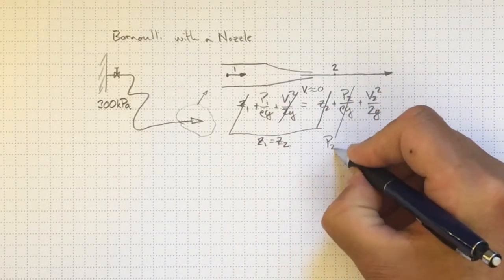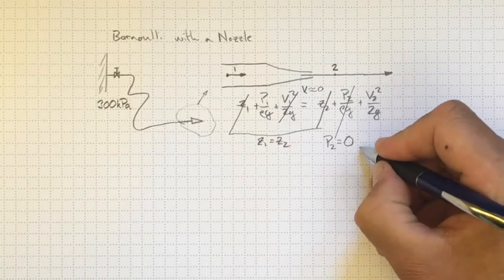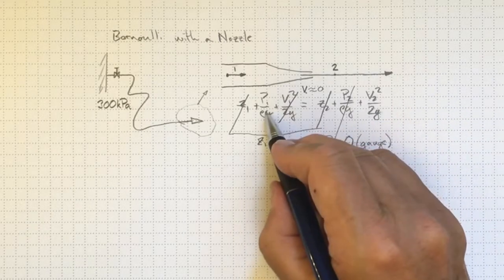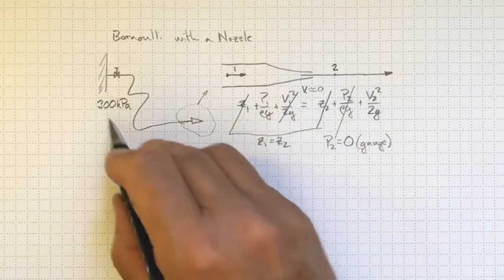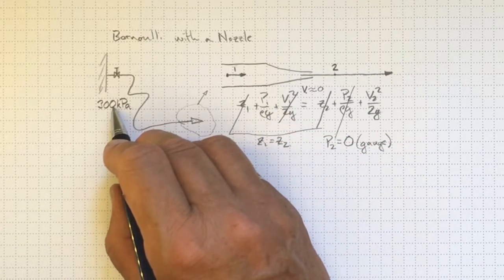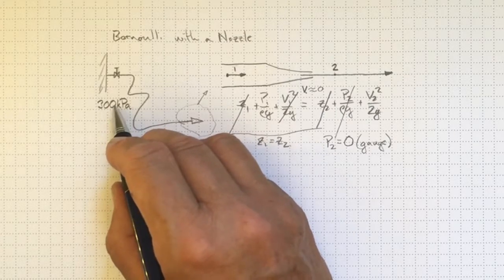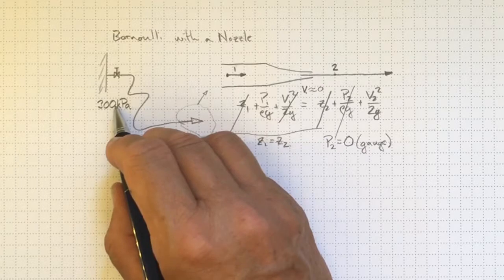P2 is atmospheric. It's equal to 0. That's a gauge pressure relative to atmospheric. So we better make sure p1 is the gauge pressure. And when we talk about municipal water pressure supply, we're always talking about how much higher pressure than atmospheric pressure anyway. So this is a gauge pressure.